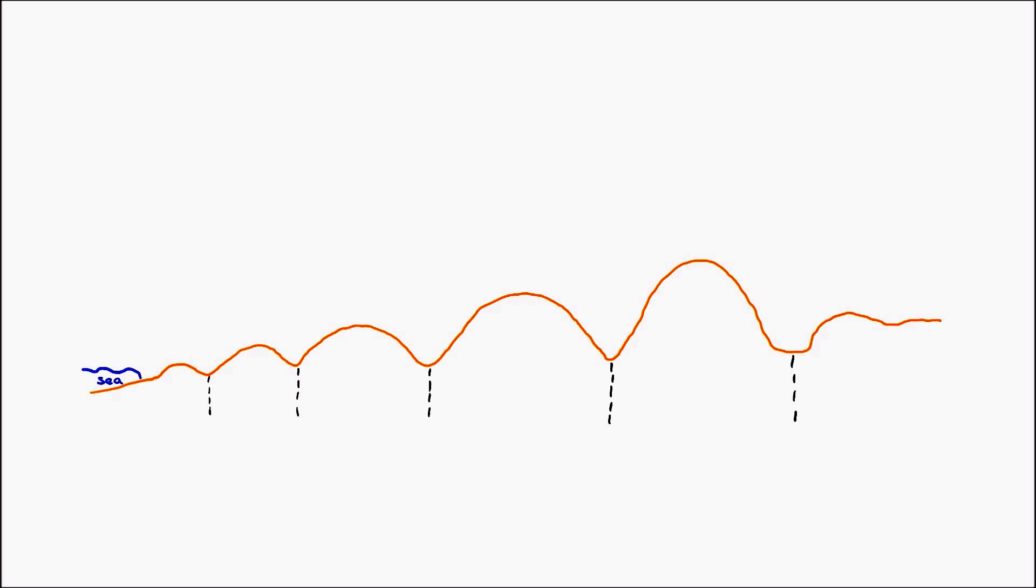Now the way that dunes are formed is they're formed by the wind picking up little sand particles and bouncing them along the beach and then getting trapped by some sort of feature that's found on the beach. They typically start from the berm which is the upper part of the swash and it forms this kind of little ridge on the coast and sediment gathers there.